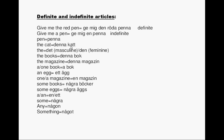Den, de, det for definite. En katt: the cat. En bok: a book or one book. Ett ägg: an egg. Note: the indefinite article changes from 'a' to 'an' if the noun starts with a vowel — for example, an egg, a magazine. Some books, some eggs. Any — used in negatives.